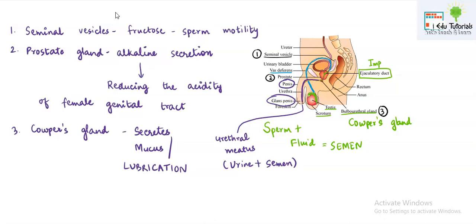The function of the three accessory glands is an important board question. Seminal vesicles produce secretion rich in fructose, which provides sperm motility. The prostate gland secretion is alkaline in nature, and this alkalinity helps reduce the acidity of the female genital tract. Cowper's glands secrete mucus, which helps in lubrication. This concludes the male reproductive system; in the next video we will study the female reproductive system and then gametogenesis.